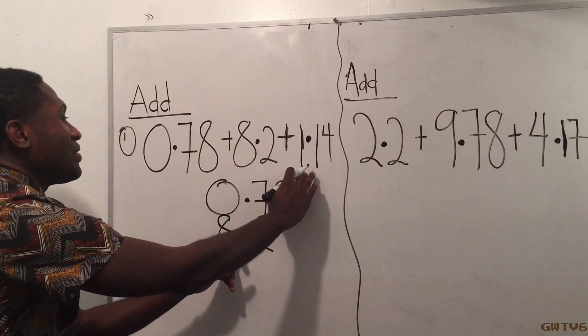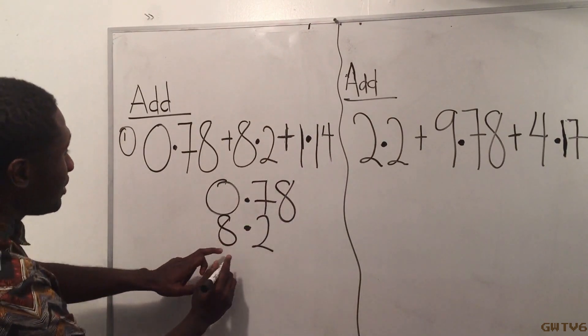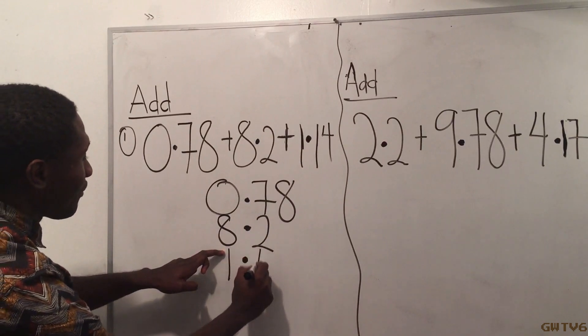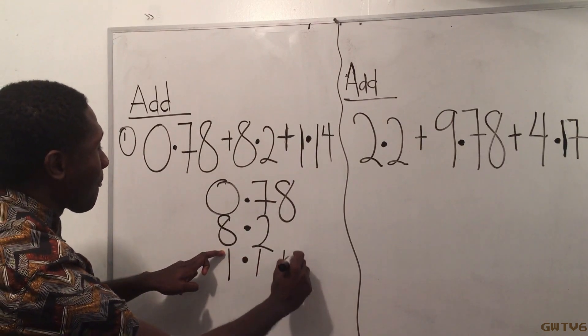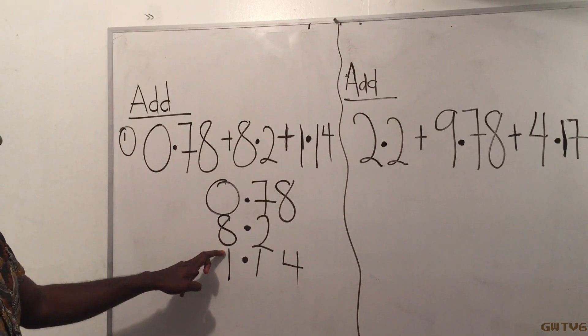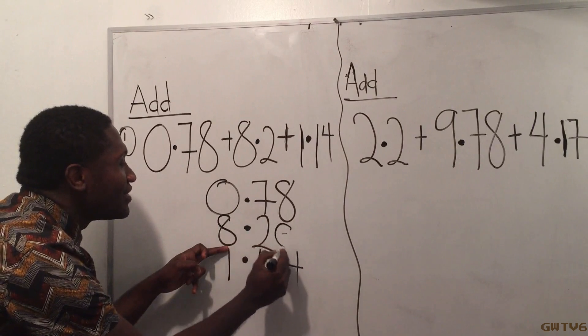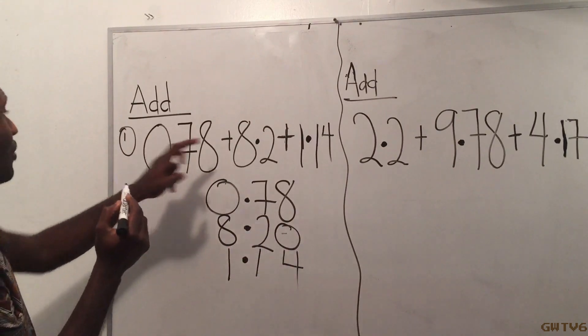Then the next one is 1.14. The decimals will be in line if I put it right here, so 1.14. Where I'm missing something I'll put a zero, so I'm gonna put a zero right there. I'm supposed to add, so I put a plus.